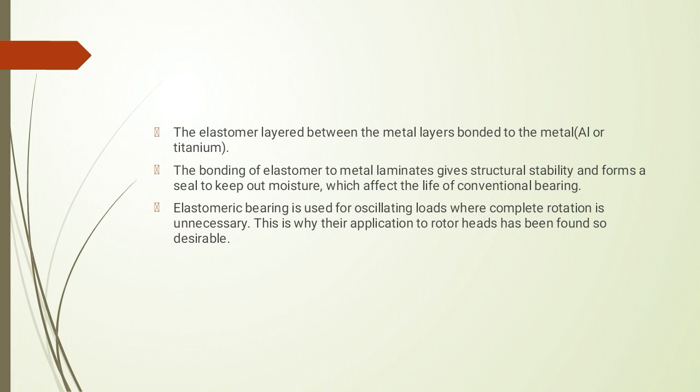हमने देखा कि elastomer जो कि solid और fluid lubricant दोनों की property possess करता है, उसे lubricant की तरह use कर सकते हैं। Rubber में यह quality भी होती है कि वह flexible भी रहती है। इसके साथ ही जब bonding करते हैं तो structural stability भी मिलती है और moisture content को बाहर भी रखता है — यह seal की तरह behave करके।